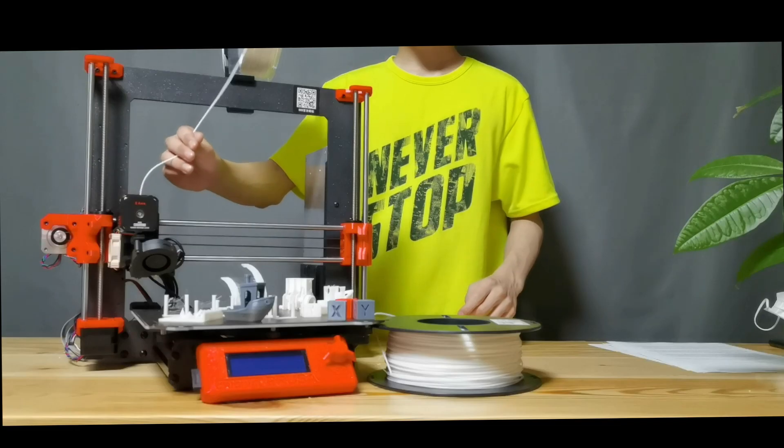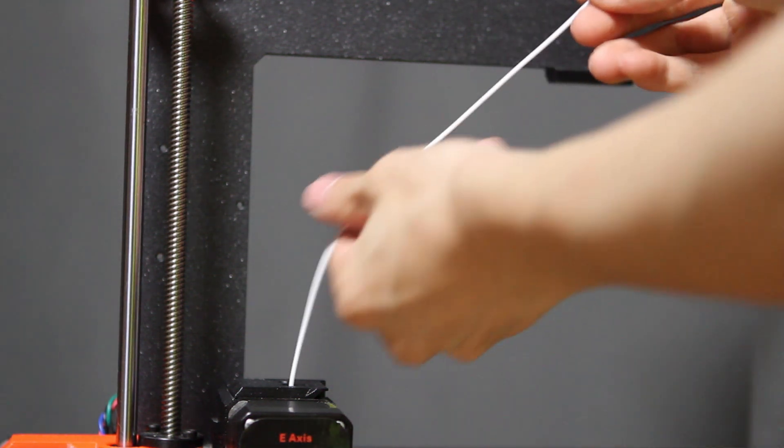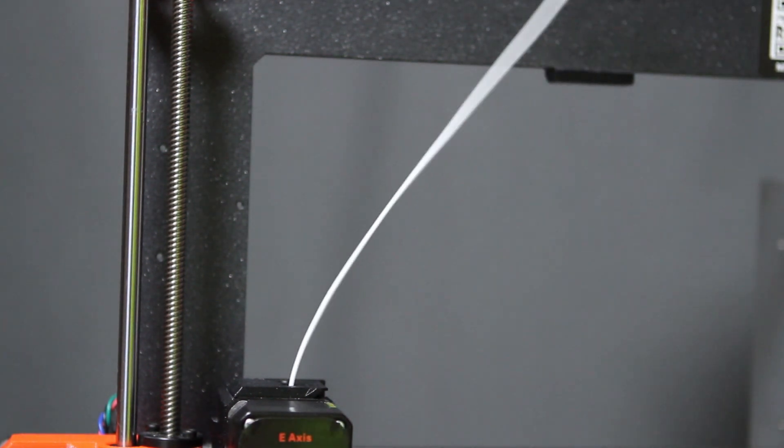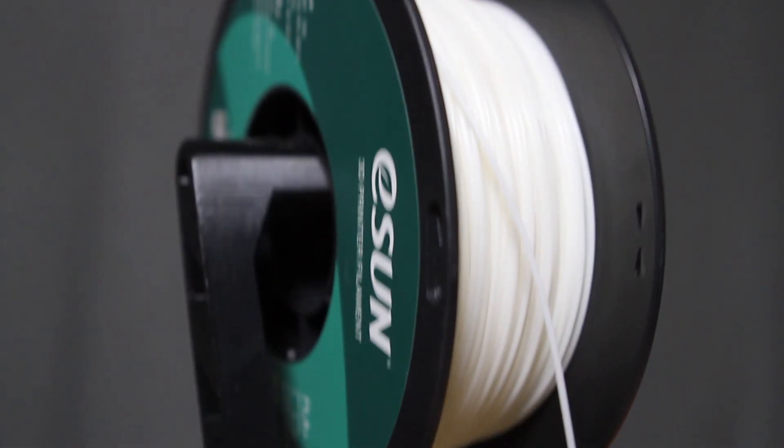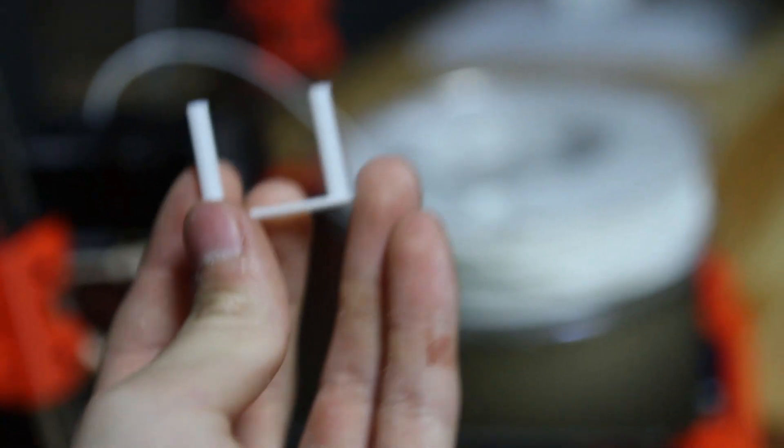It basically takes any filament I throw at it. This is currently loaded with TPU, which is a flexible filament, specifically Polyflex. And I've even thrown PLA at it. This is ESUN PLA+. I've had some problems with stringing on this printer, but I think I've fixed it by switching slicers and tuning the temperatures a bit.